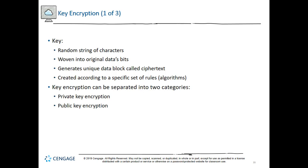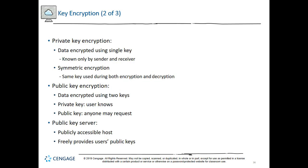In private key encryption, the data is encrypted using a single key that only the sender and the receiver know. Private key encryption is also known as symmetric encryption because the same key is used during both the encryption and decryption of the data. The potential problem is that the sender must share that key with the recipient without it being intercepted. In public key encryption, the data is encrypted with a private key known only to the user and decrypted with a mathematically related public key, which can be made available through a third-party source such as a public key server. This ensures data integrity as the sender's public key will only work if the data has not been tampered with.